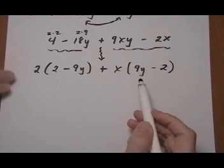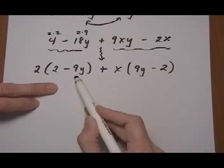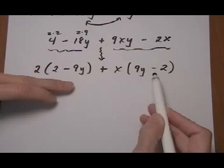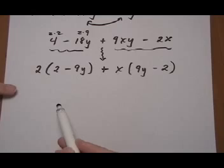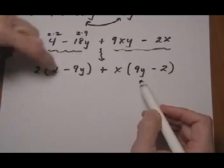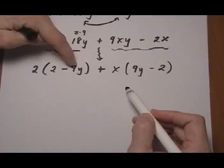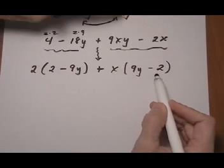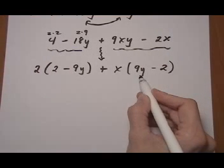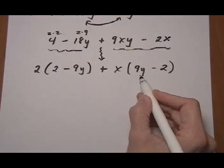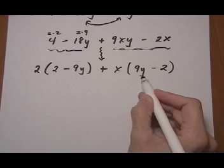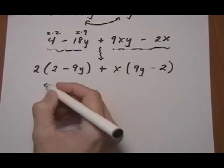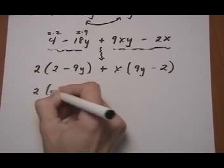And now what I notice is that the binomial terms, which I'm hoping I can pull out as a common factor to complete the factoring, have the terms in the different order, 2, 9y, and then 9y, 2. So I'm going to rewrite this last one here so that the terms are in the same order. And it doesn't matter which one I rewrite to be in the same order as the other one. So I'm just going to keep the first one the same.